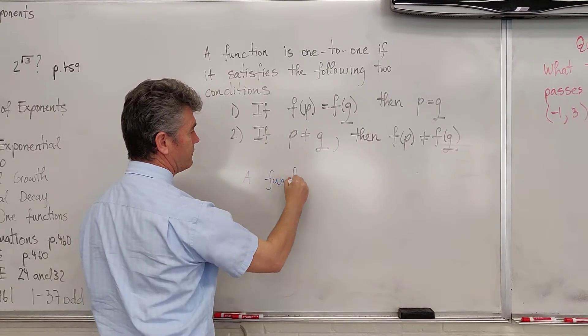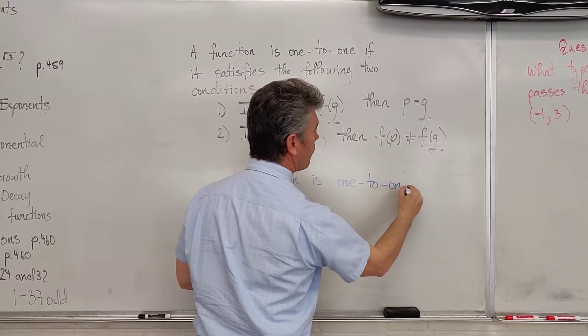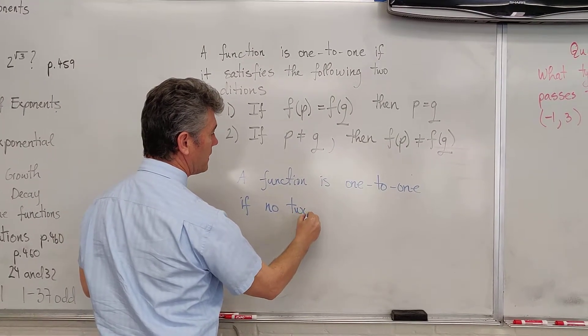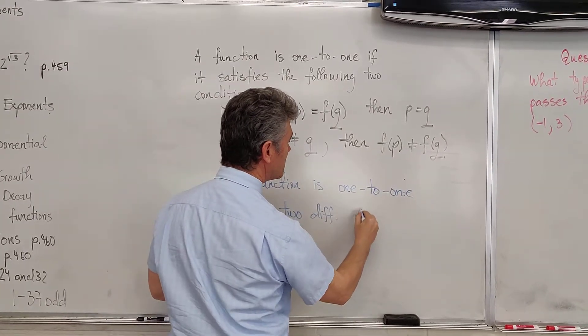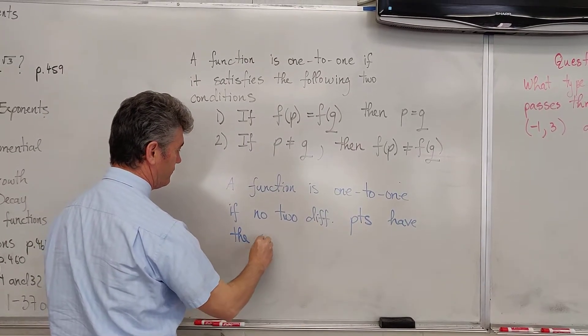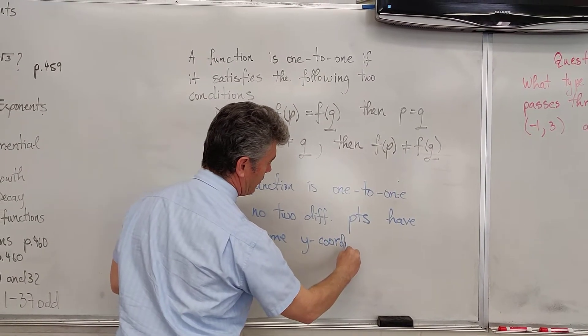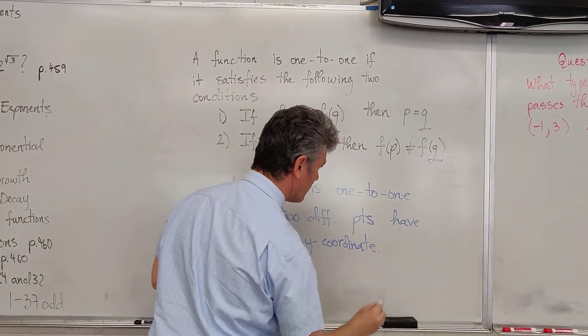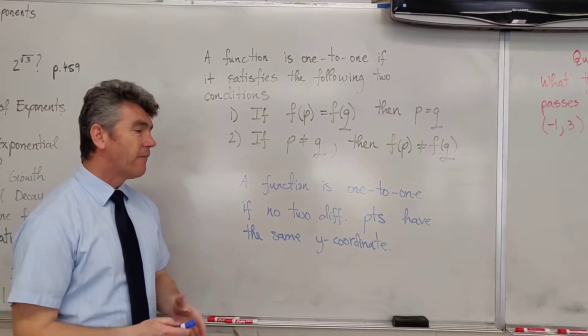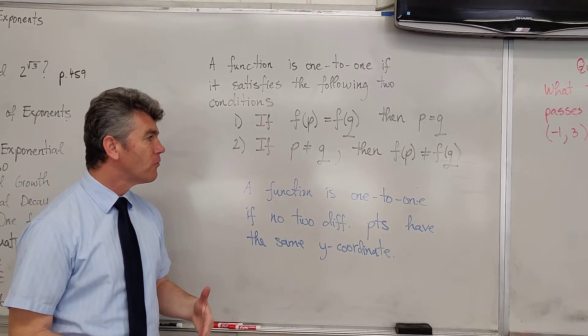Let's make this a little bit easier for you. A function is one-to-one if no two different points have the same y-coordinate. No two different points on the graph of a function can have the same y-coordinates, and that's how you can tell whether a function is one-to-one or not.